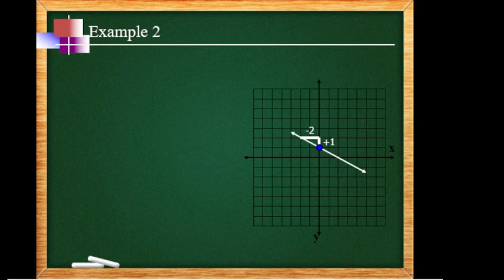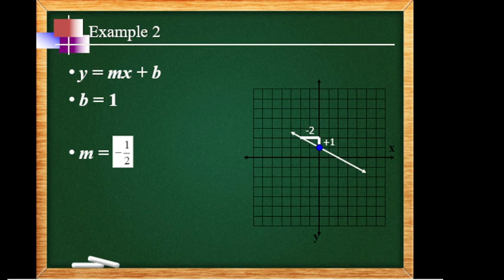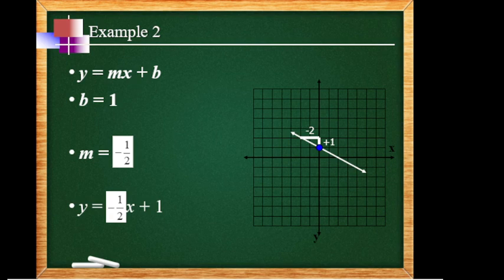Example 2. The graph crosses the y-axis above zero. Counting: 0, 1 — so b = 1. Then I rise 1 time and run to the left 2 times, so that's why it's negative 2. So the slope is negative one-half. Substituting, the equation is y = negative one-half x plus 1.